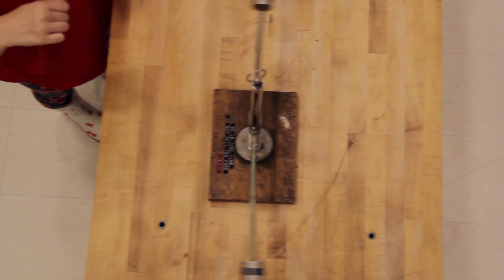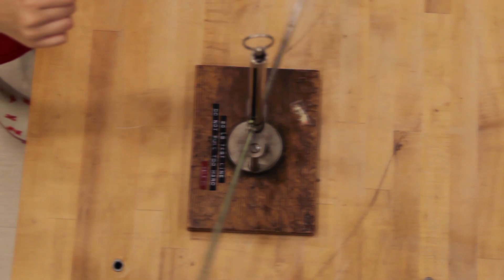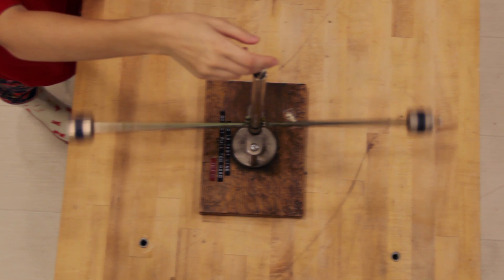Let's start by placing the masses in motion so that they have angular momentum about the central axis. We can then pull the cord, which will move the masses closer to the axis of rotation.